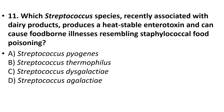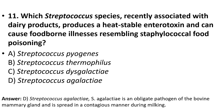Eleventh question: Which Streptococcus species recently associated with dairy products produces a heat-stable enterotoxin and can cause foodborne illness resembling staphylococcal food poisoning? Options: Streptococcus pyogenes, Streptococcus thermophilus, Streptococcus dysgalactiae, Streptococcus agalactiae. The answer is option D, Streptococcus agalactiae, an obligate pathogen of the bovine mammary gland spread in a contagious manner during milking.